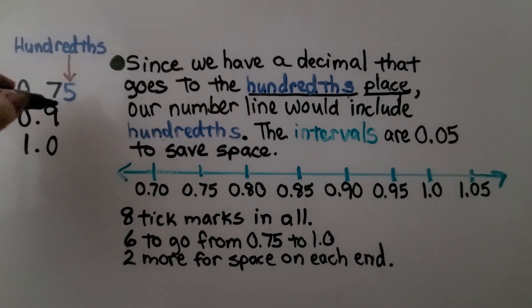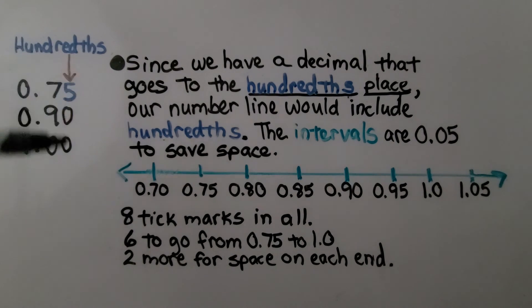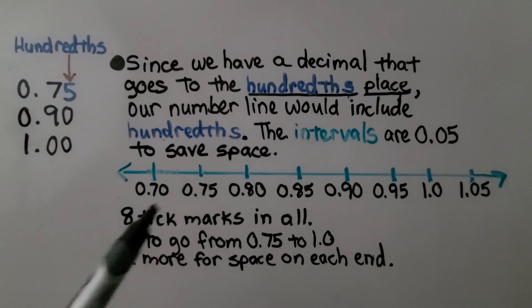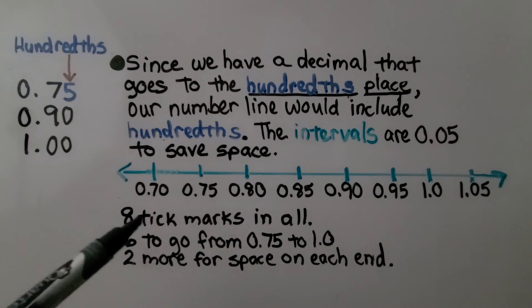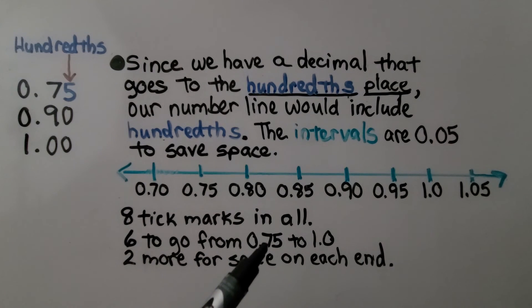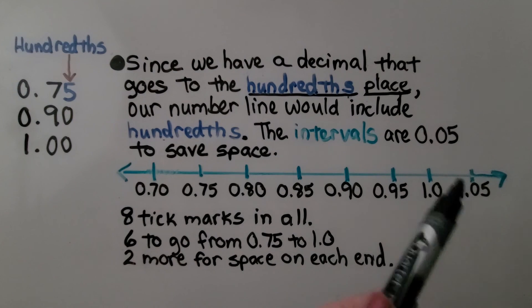But we can see, because we know we can add a 0 at the end of a decimal and it won't affect its value, we can see that we can have it go to the hundredths place. We only have 3 numbers, but there's 8 tick marks in all to go from 75 hundredths to 1 whole. We needed 6. Then we needed 2 more for space on the ends.